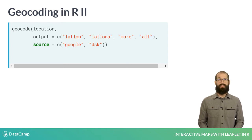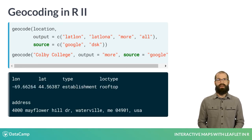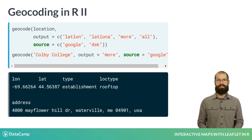Using this approach, we can geocode place names like Colby College, and setting the output argument to 'more' will return the college's address in addition to its coordinates.